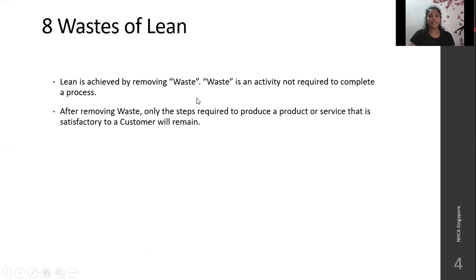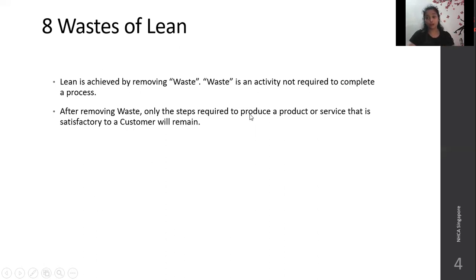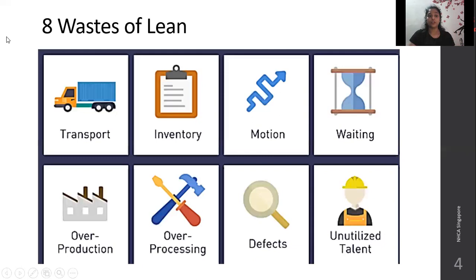Eight wastes of Lean. Lean is achieved by removing waste. Waste is an activity which is not required to complete a process. After removing the waste, only the steps required to produce a product or a service are ensured properly in a Lean process, and thus the customer will be satisfied. These are the eight wastes of Lean.